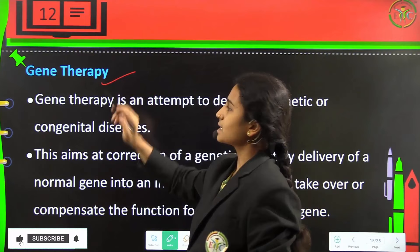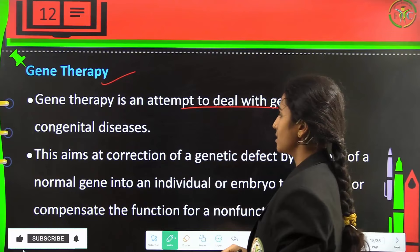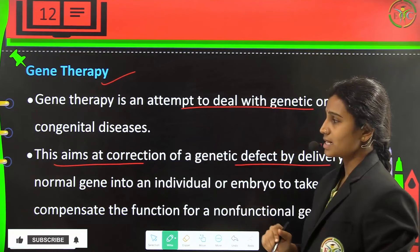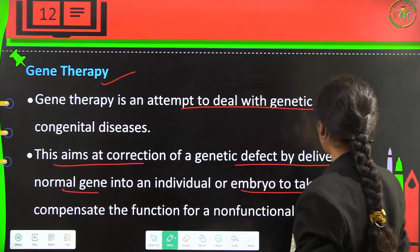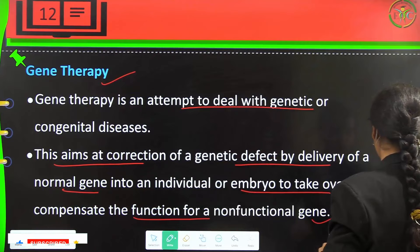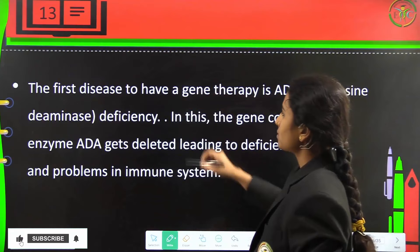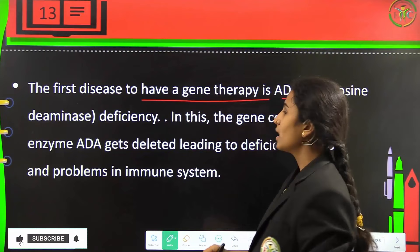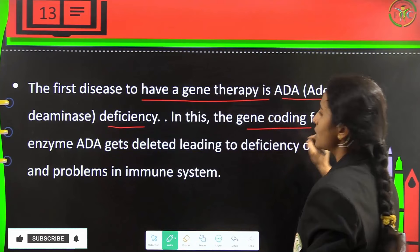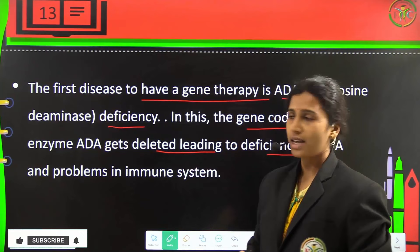Gene therapy is an attempt to deal with genetic or congenital diseases. It aims at correction of genetic disease by delivering the normal gene into an individual or embryo to compensate for the function of a non-functional gene. The first case of gene therapy is ADA — adenosine deaminase deficiency — where the gene coding for the enzyme ADA gets deleted, leading to deficiency of ADA and problems in the immune system.